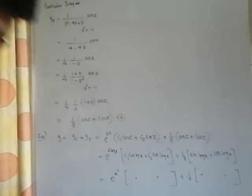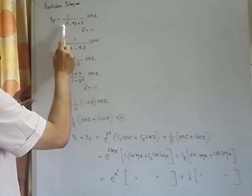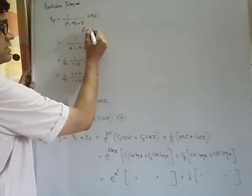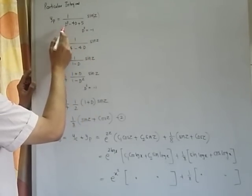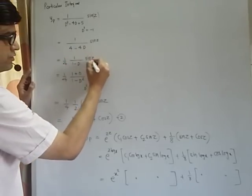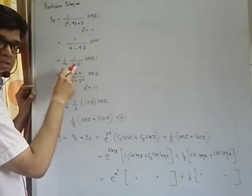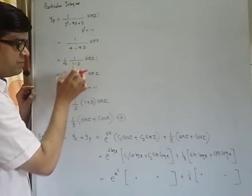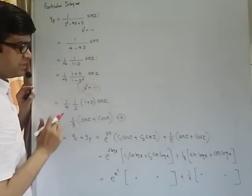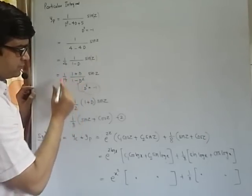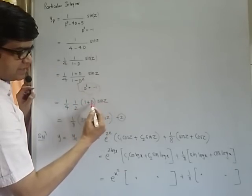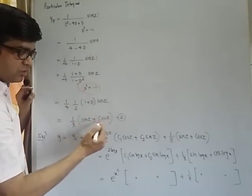Next, we find the particular integral which is yp equals 1 by the polynomial D operating on sin z. Here z coefficient is 1, so we replace d square as negative of 1. If I replace d square as negative of 1, this will be minus 1 plus 5 which is 4 minus 4d as it is. Taking 4 common, I get this. Here coefficient of z is 1, so I put d square as minus 1, but there is no d square term. I multiply and divide by 1 plus d. Numerator is 1 plus d and denominator is 1 minus d square. I put d square equals minus 1 here, so it is 1 minus of minus 1 that is 2. So it is 1 by 4 into 1 by 2, 1 plus d sin z. This is 1 by 8 times sin z plus d sin z. D sin z means derivative of sin z which is cos z.